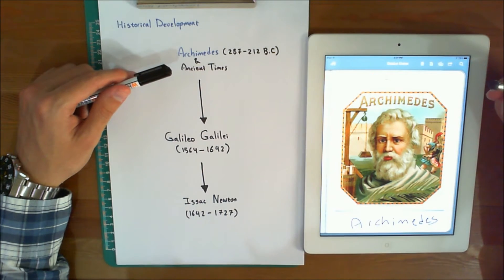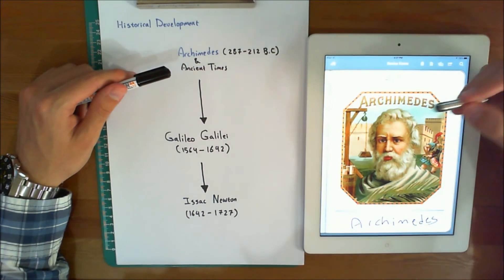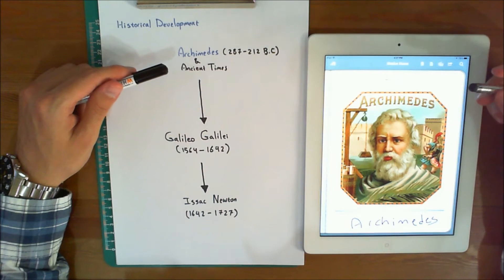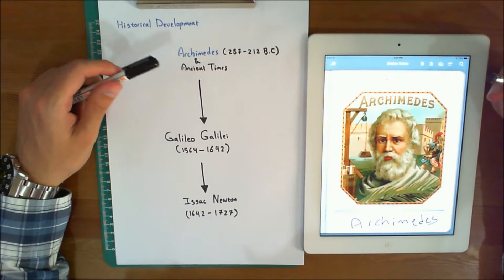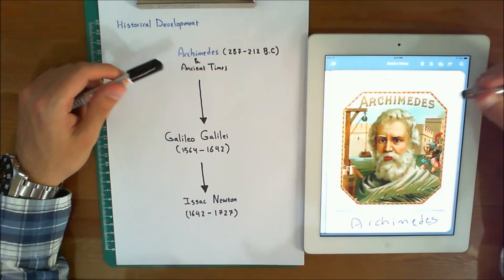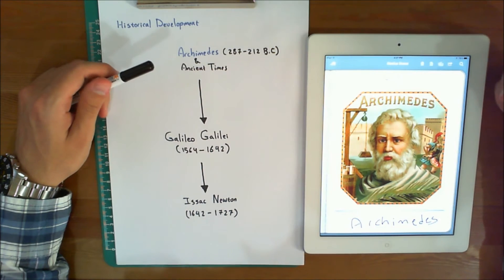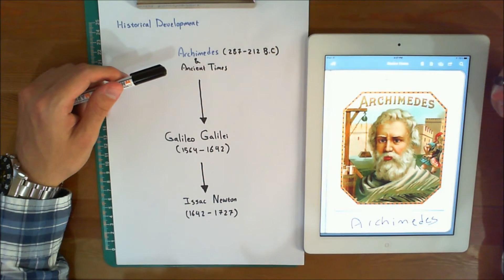For example, the writings of Archimedes, this guy shown over here, deal with the principle of the lever. Studies of the pulley, inclined plane, and wrench are also recorded in ancient writings, at times when the requirements of engineering were limited primarily to building construction.